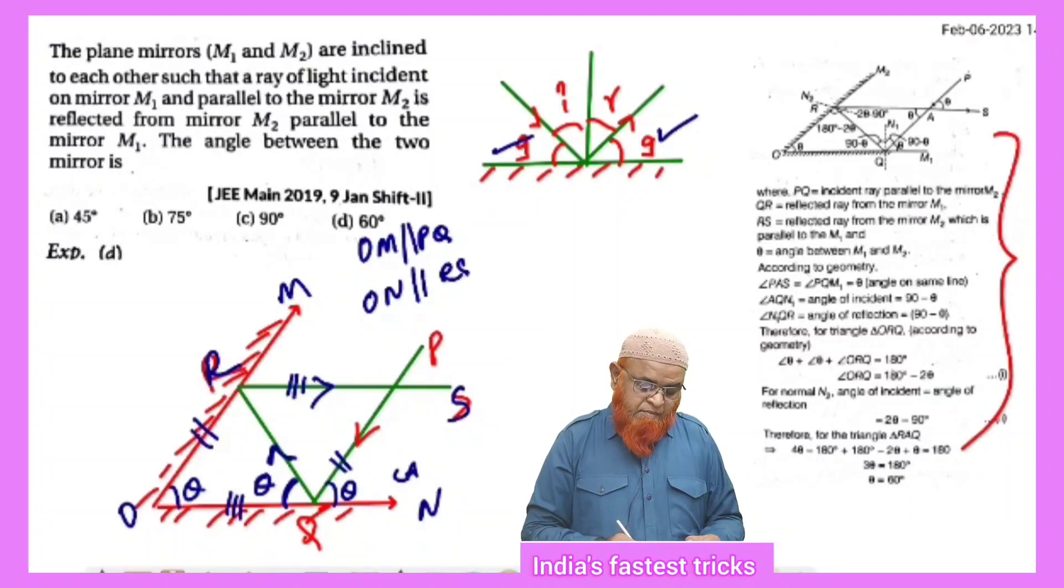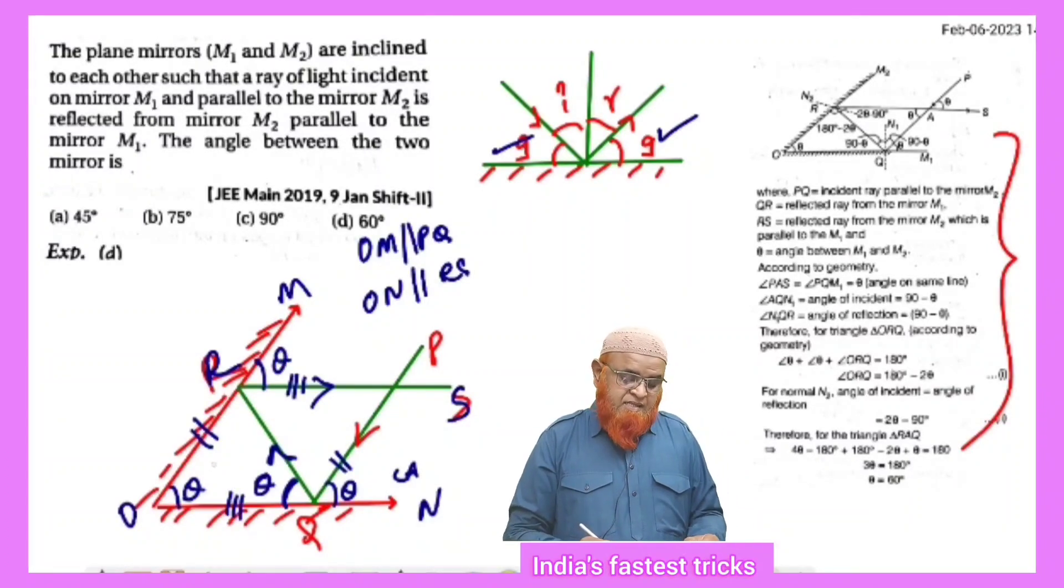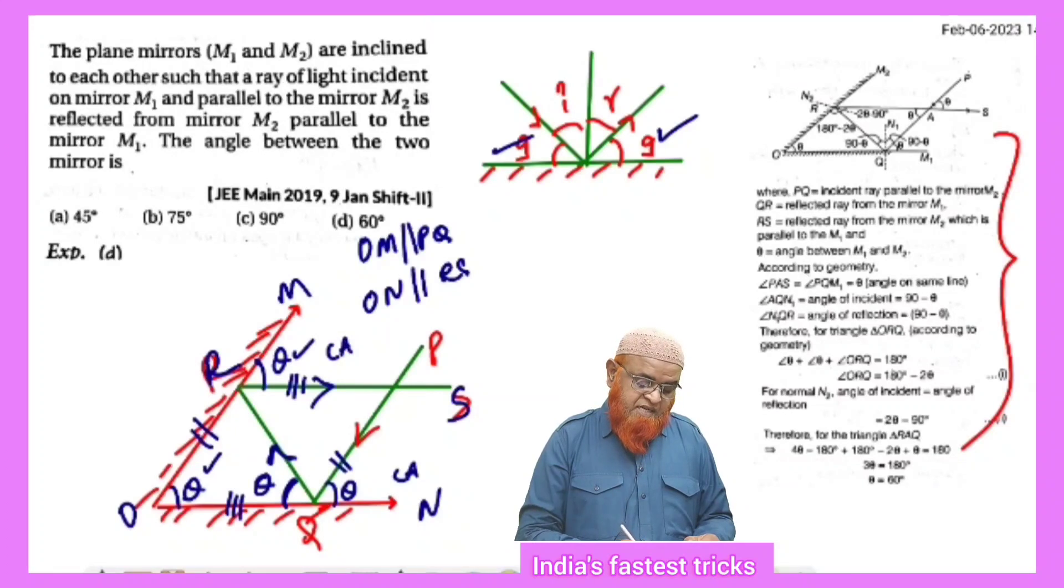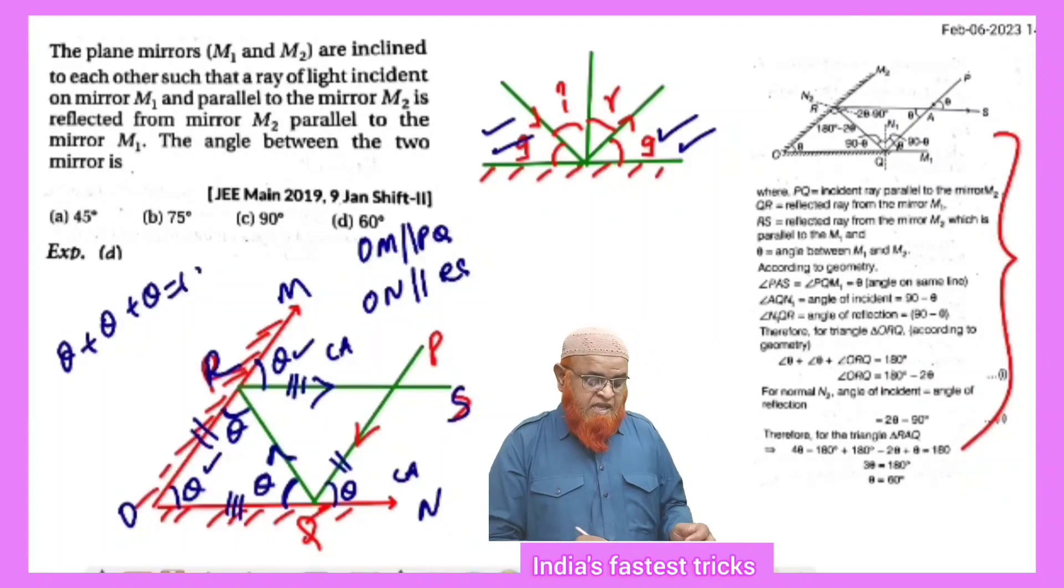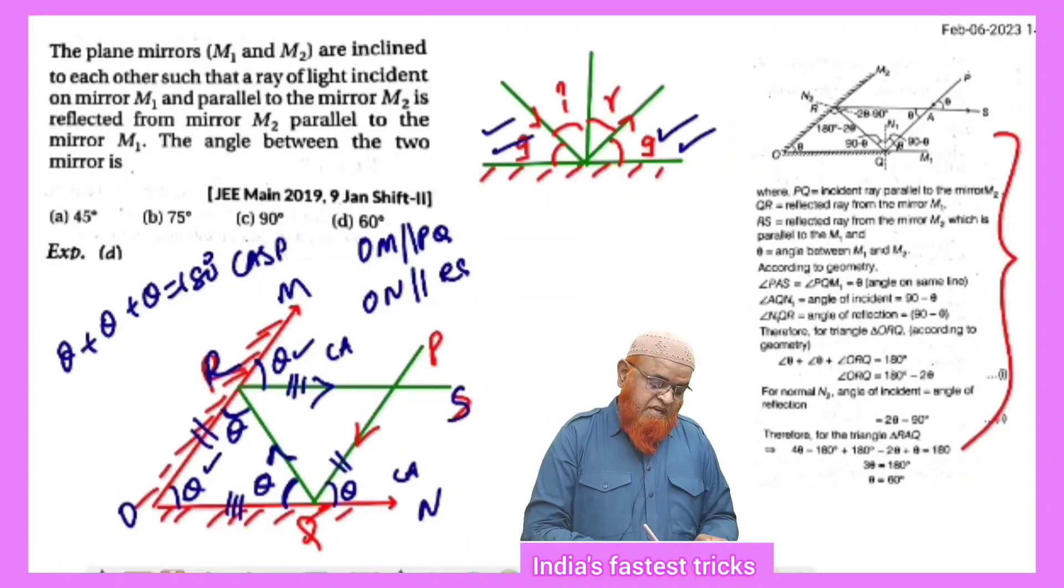Similarly, ON is parallel to RS, so we can also take if this is theta, this is also going to be theta. These two are called corresponding angles. If this is theta, this is also going to be theta because these are called glancing angles. Now we're getting theta plus theta plus theta.